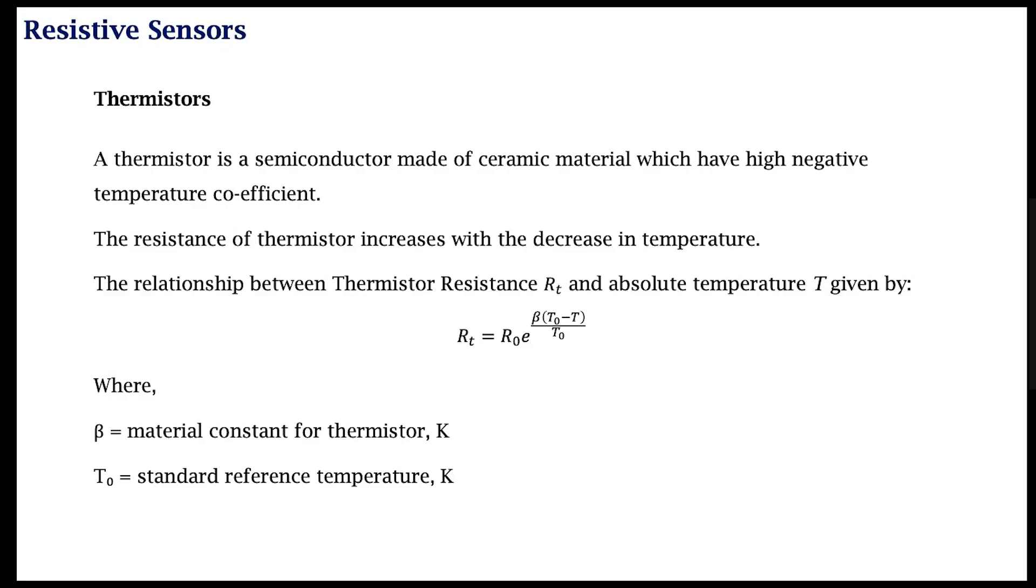If the temperature decreases, the resistance increases. So the relationship between thermistor resistance Rt and the absolute temperature T is given by: Rt = R0 e raised to β(1/T - 1/T0), where β is the material constant for the thermistor, which will vary depending on the material, and the reference temperature is T0.